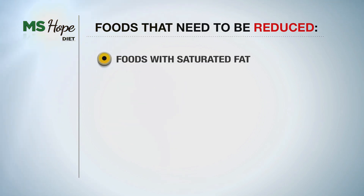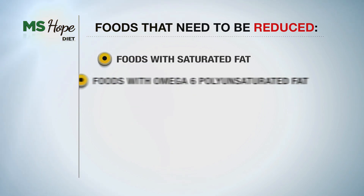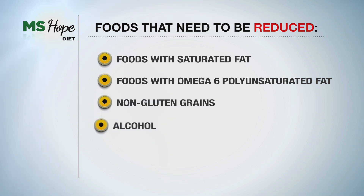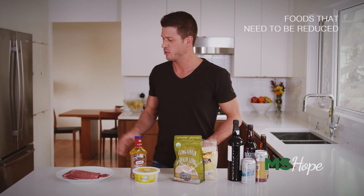Now there are a number of other foods that need to be reduced. Foods that need to be reduced include foods with saturated fat, foods with omega-6 polyunsaturated fat, non-gluten grains, and alcohol. Saturated fat is found in all red meat. Red meat can be eaten, but I only eat it once a week and only lean cuts.